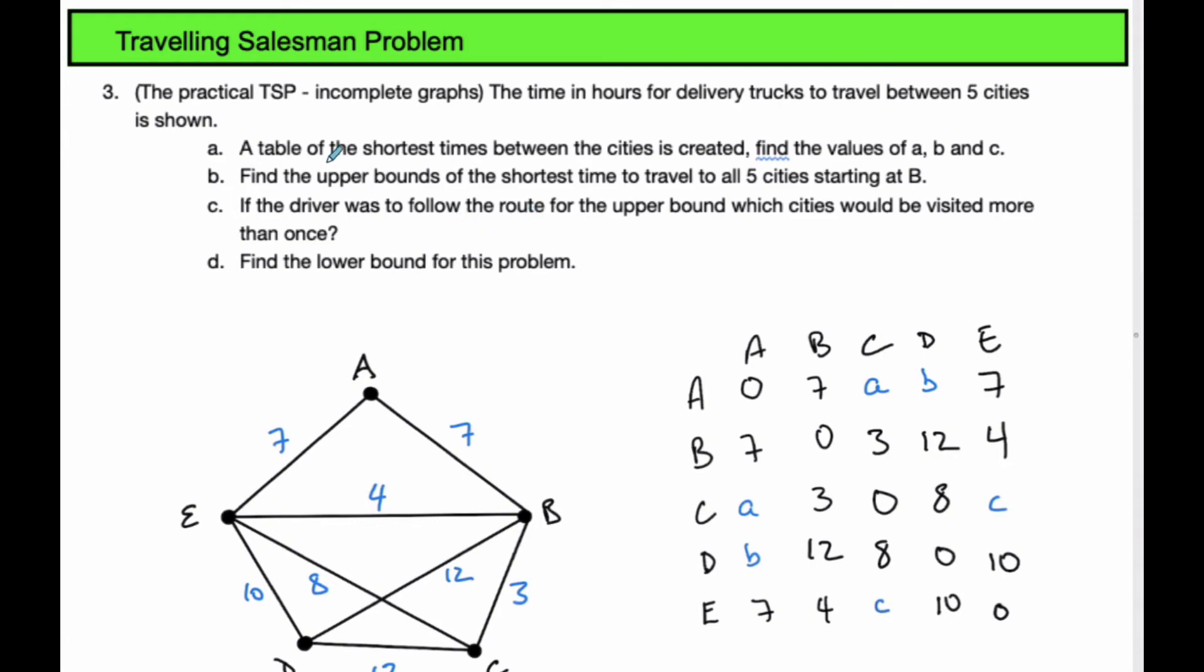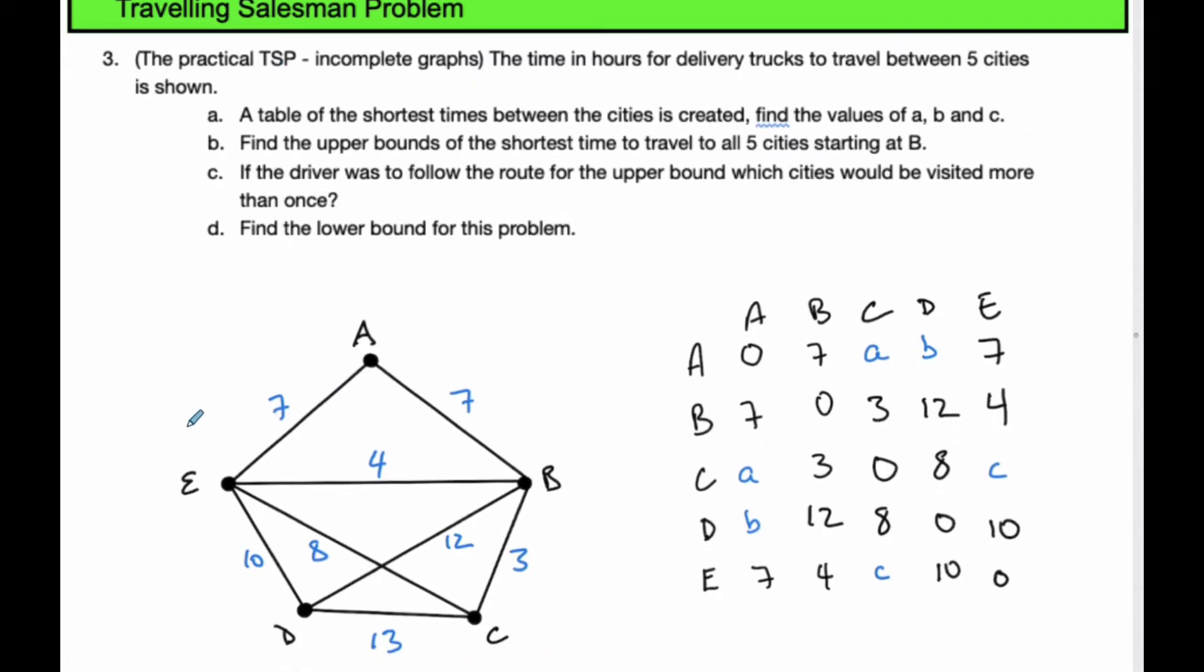We're going to do another traveling salesman problem, the practical traveling salesman, when we're given a scenario that's an incomplete graph like what we have here. This shows the time in hours for delivery trucks to travel between five cities. In doing this, we take this incomplete graph and make a table, and by making the table, we force it to be a complete graph.